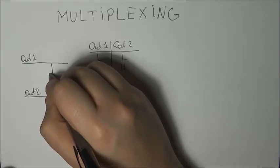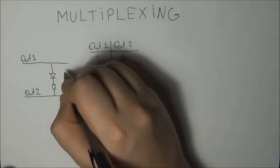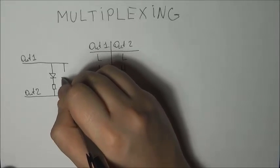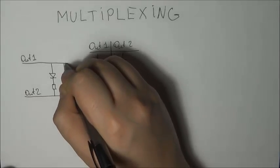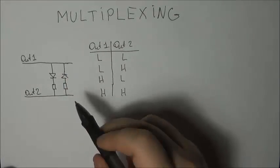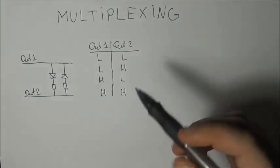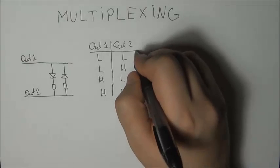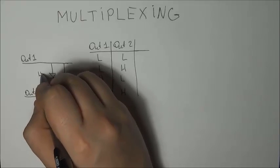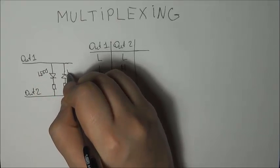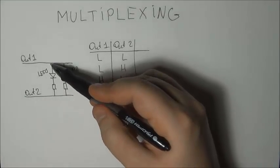But more commonly the way you would drive the LEDs is like so. You would have two LEDs in between back to back. So what does this create? So this in this state, let me just continue with the truth table. So let's call this LED 1 and this is LED 2.